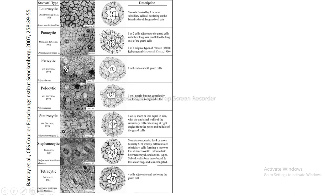Staurocytic means four cells, more or less equal in size, all surrounding the guard cells, with the anti-clinal walls of the subsidiary cells extending at right angles. These anti-clinal divisions extend perpendicular to the long axis of the guard cells, with one division at the poles and one at right angles to the previous one — one at the middle and one at the poles of the guard cells.